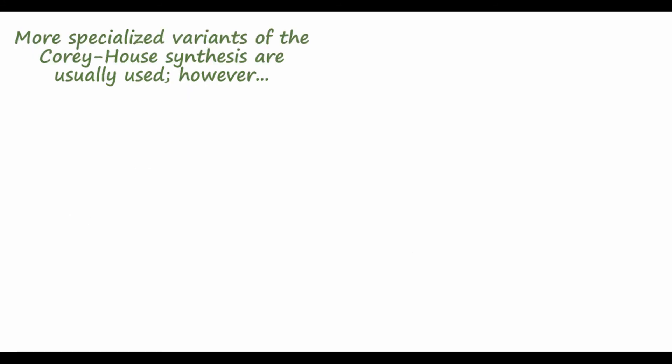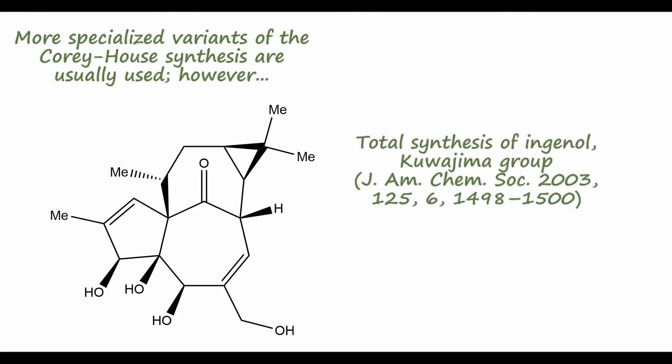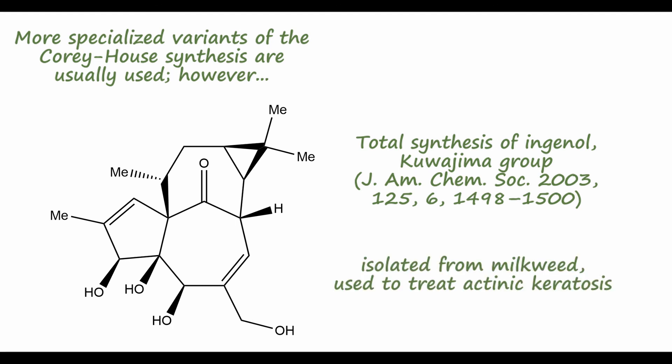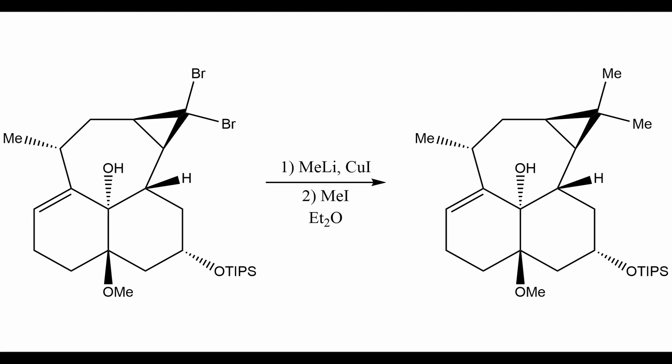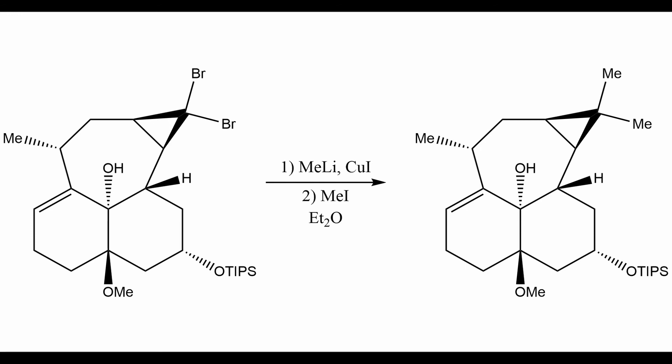Although several more sophisticated variants of the Corey-House synthesis have been developed, it has been used in some very important syntheses in the literature. One example is the total synthesis of Ingenol by the Kuwajima group, published in 2003. Ingenol is isolated from milkweed and is used to treat precancerous growths caused by UV damage to the skin. After one step, the group had a dibrominated cyclopropane ring shown on screen, and they used the Corey-House reaction to methylate it — treating the intermediate with methyllithium and copper iodide, then following up with methyl iodide to capture the other bromine to form a dimethylated intermediate.